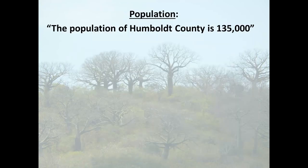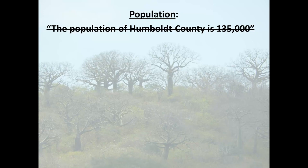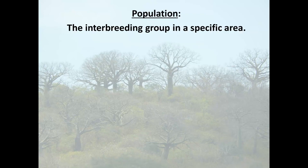The next word on our list is population. Here's another problematic word. People think you mean population size — like 'the population of Humboldt County is 135,000.' That is not the definition I want you to know. A population to a biologist or an ecologist is the interbreeding group in a specific area. So now we have a geographic component to interbreeding. Before, all potentially interbreeding things were a species, but the ones in a particular area are called a population.